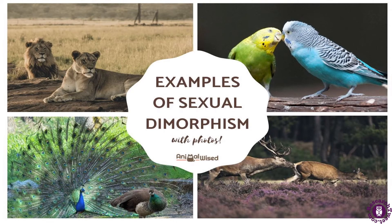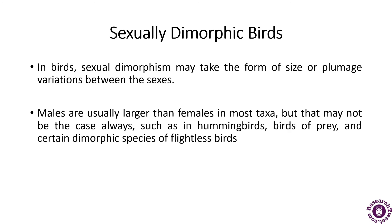Now, some examples of sexual dimorphism — in birds, pinnipeds, and fish. In birds, sexual dimorphism may take the form of size or plumage variations between the sexes. Males are usually larger than females in most species, but that may not always be the case, such as in hummingbirds, birds of prey, and certain dimorphic species or flightless birds. Males are usually more ornamented or brightly colored than females.